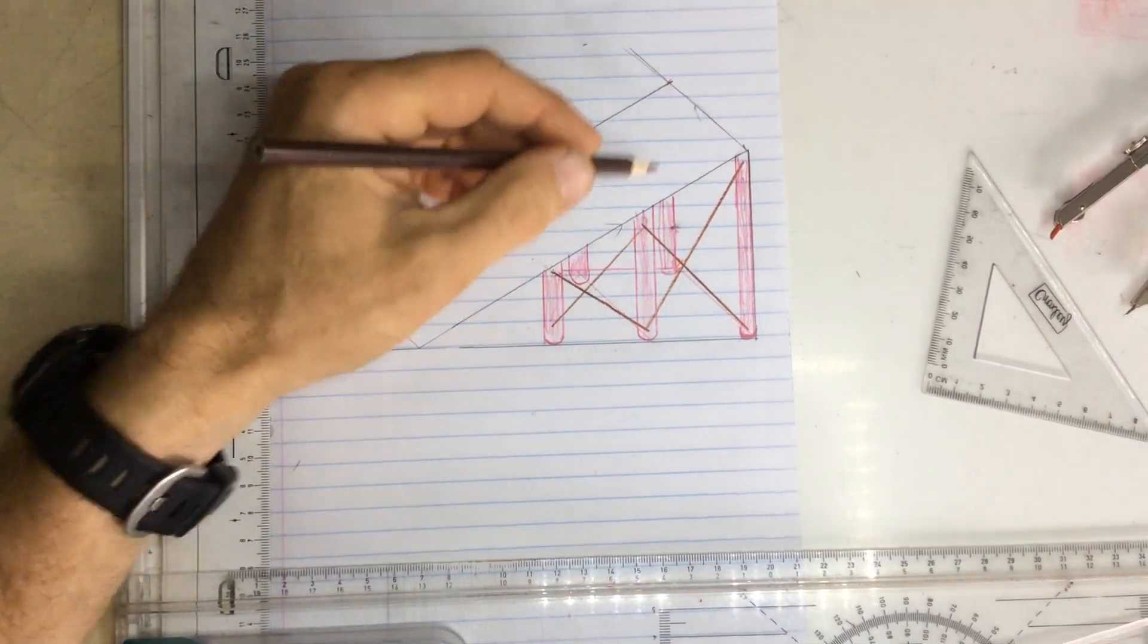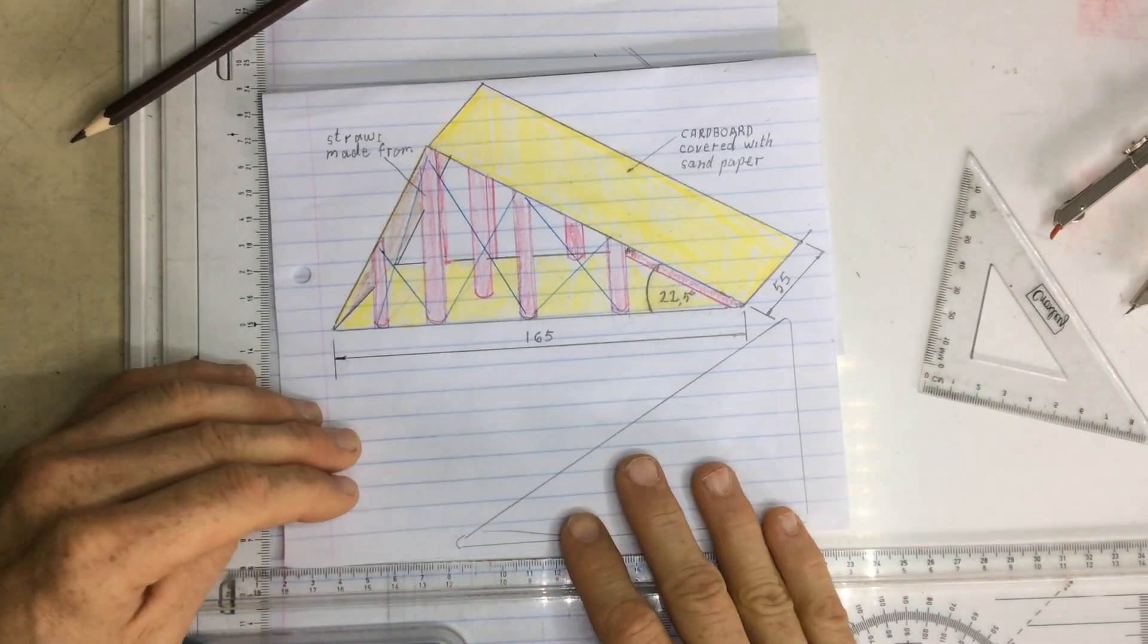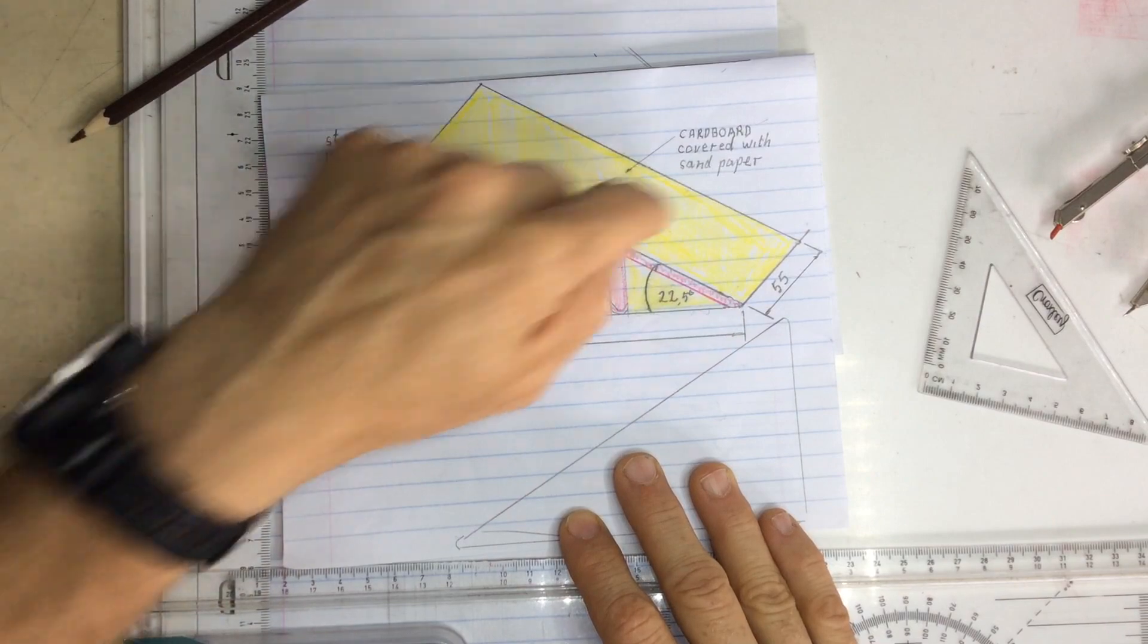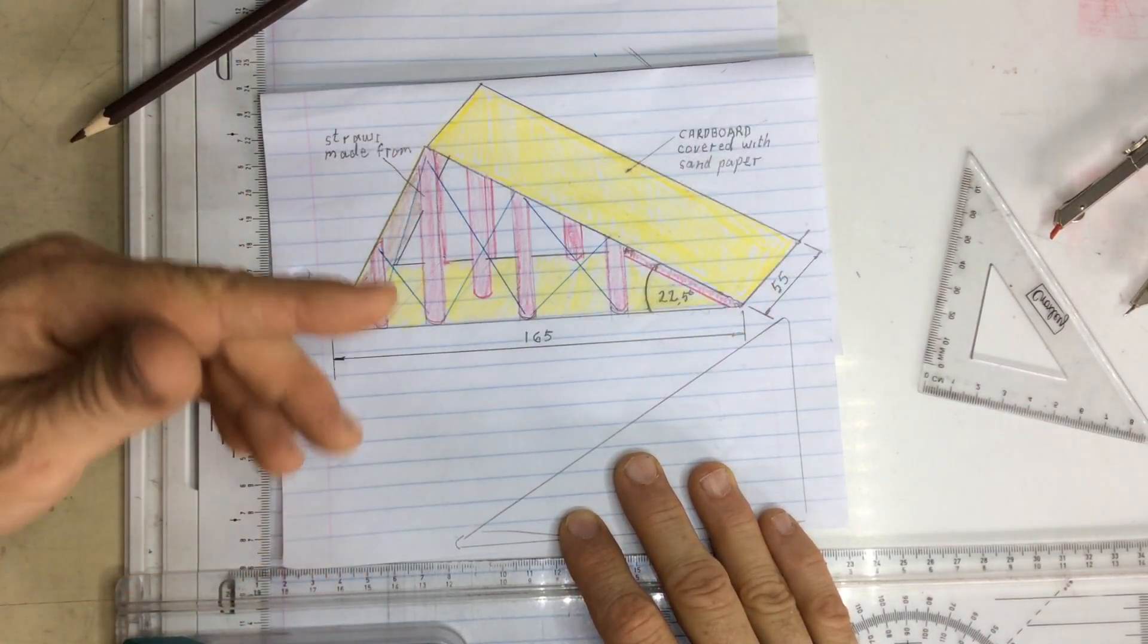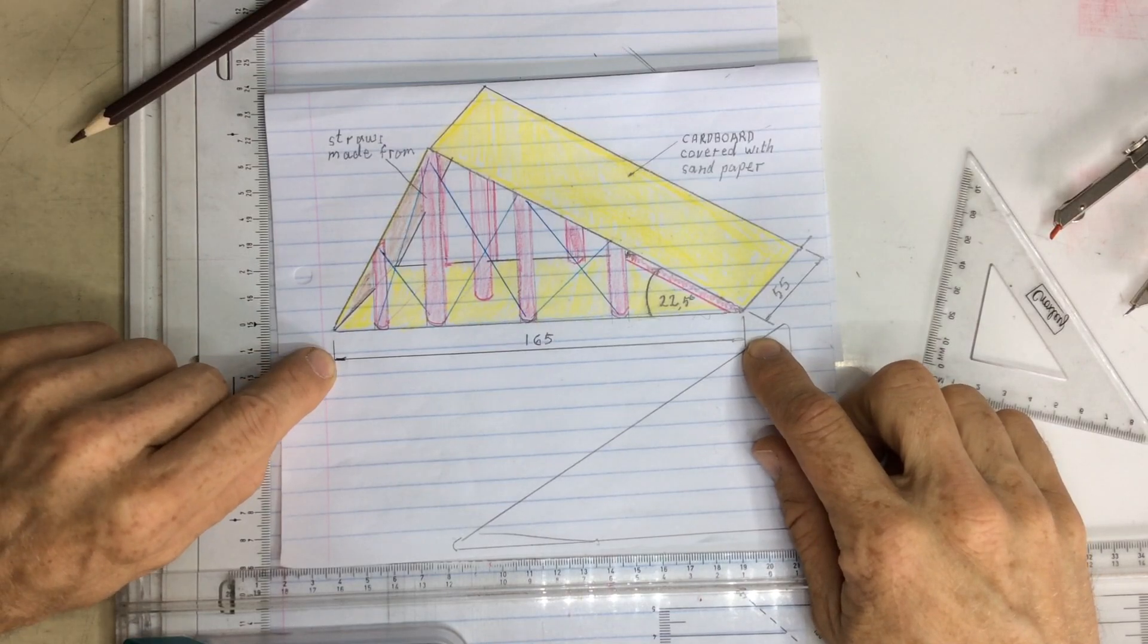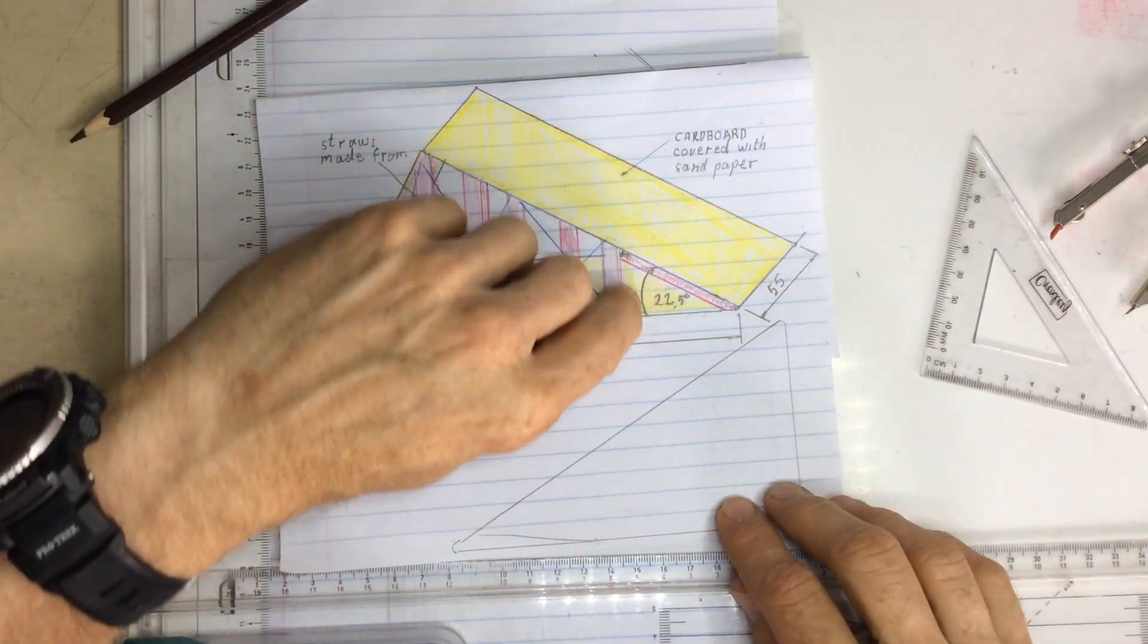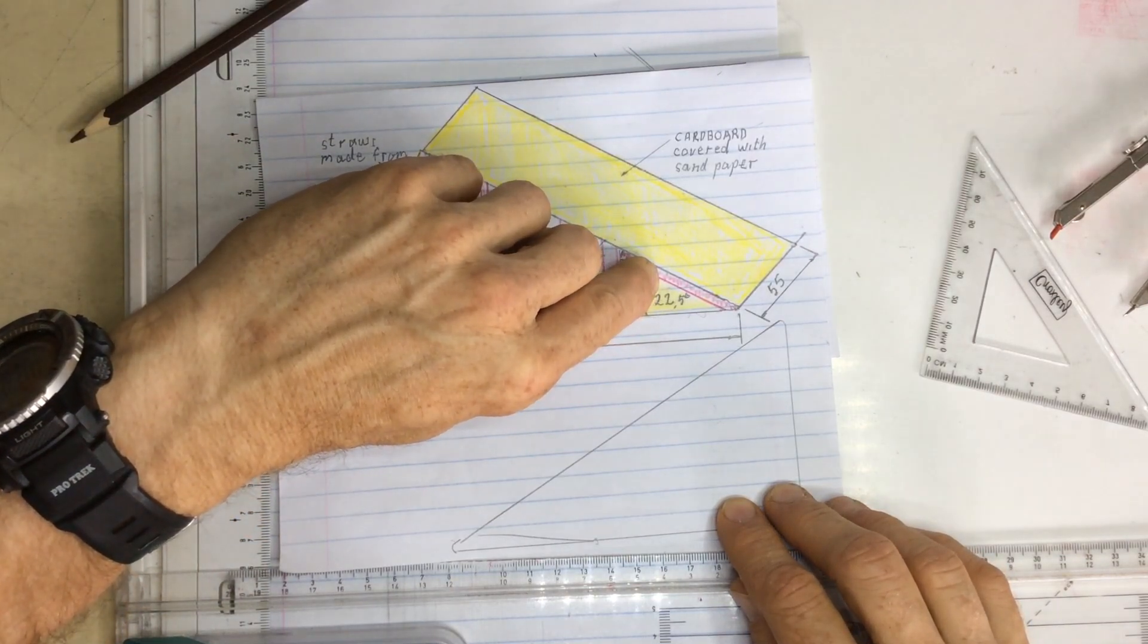Once you've got that, put your labels and notes on. I'm just going to put this one in place. Label what it is that it's being made out of. Say what you're going to do to it. Like I put cardboard covered in sandpaper for extra grip. Straws made from, I don't know, cardboard or string. Put the dimensions in. Put the dimensions in for the length and the breadth. And put in the angle that you are going to use in the actual working drawing itself.